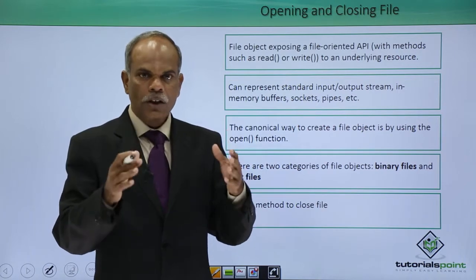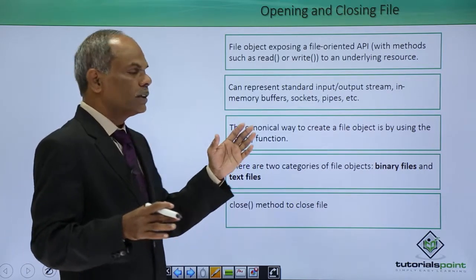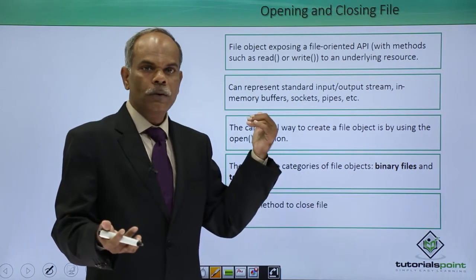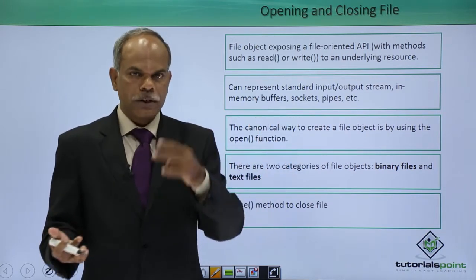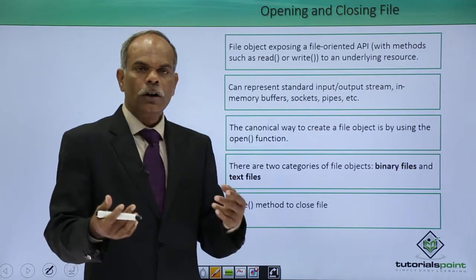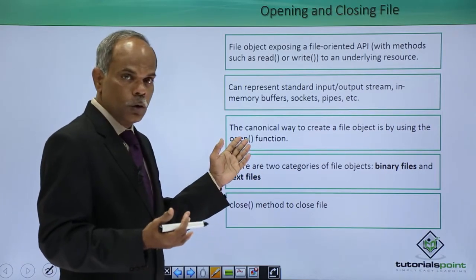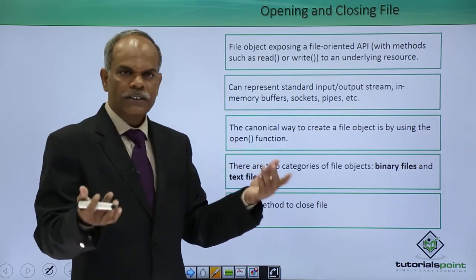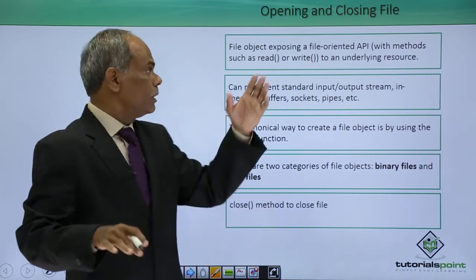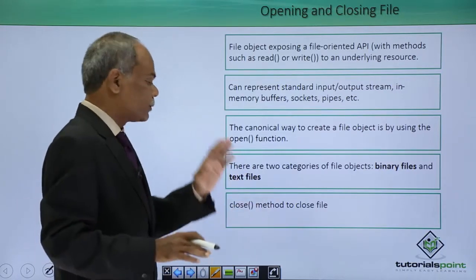Python's library provides a built-in function called open. This open function is used to create a file object. The files created by the open function are of two types: binary files or text files. In order to write data into either a binary or text file, you have to invoke the open function. And obviously, when the file is opened, you have to ensure that before the program is closed, the file should also be closed. There is a close function for this.